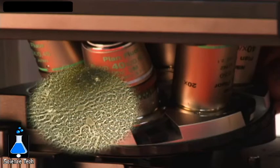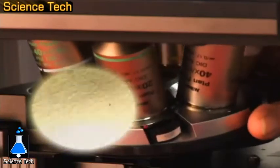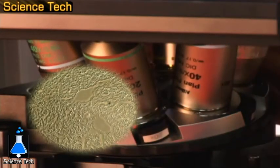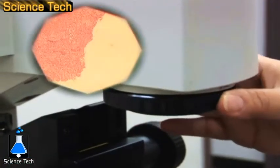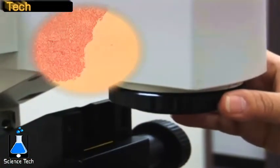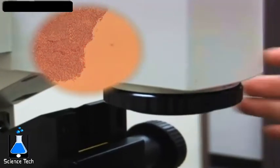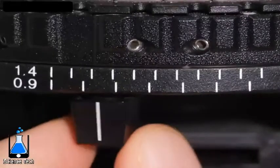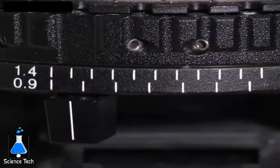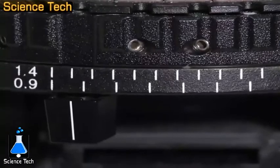Once the sample has been located at low power and is in focus, move to the higher power objective that will be used for acquiring images. Optimize the quality of the lighting by first adjusting the field diaphragm so that the diaphragm itself is just outside of the field of view. Next, adjust the condenser diaphragm so that the settings match the numerical aperture of the objective in use.